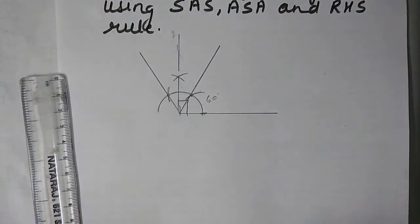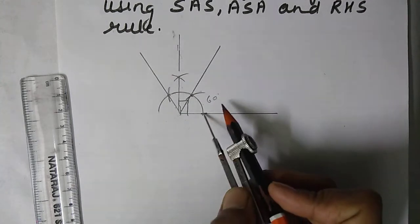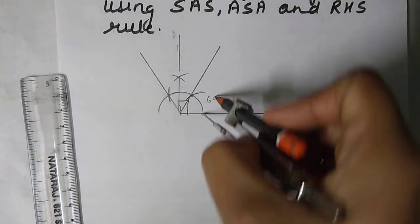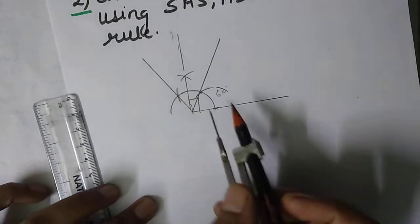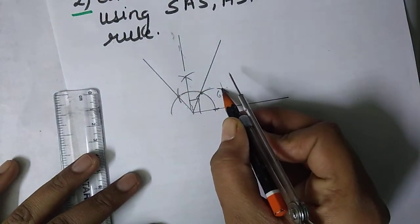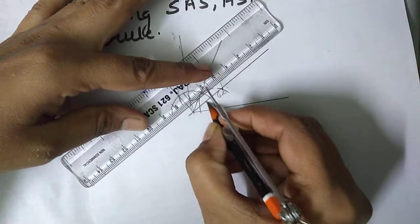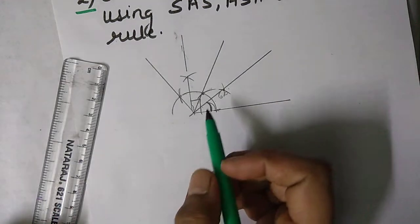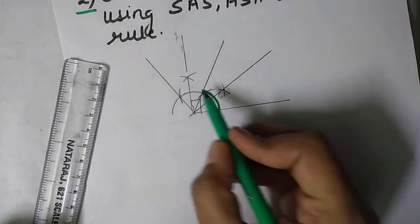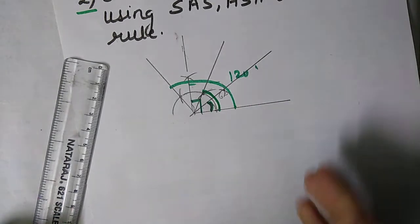Now, how to construct 30 degrees. We know 30 degrees lies between 0 and 60 degrees. To construct it, put the needle at 0 degrees and for the second arc at 60 degrees. Where these two arcs intersect is 30 degrees. So we have 30 degrees, 60 degrees, 90 degrees, and 120 degrees constructed. These are the angles we have learned so far using compass.